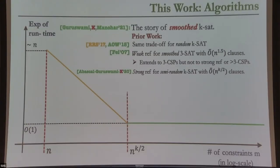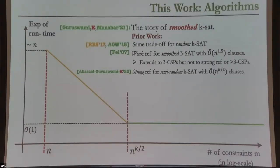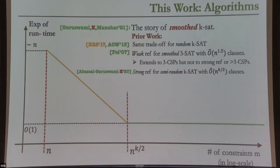Question from the audience: is the flipping probability of 0.01 fixed, or can an adversary play between 0.1 and 0.2? Answer: as long as you're flipping every literal with some constant probability, it could be different for every literal — that's fine. As long as you're flipping with some fixed constant probability, it's going to be okay.